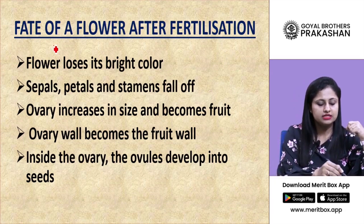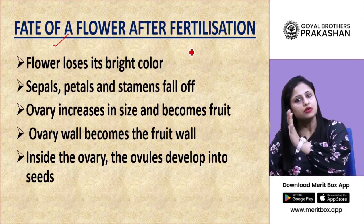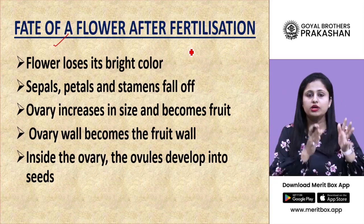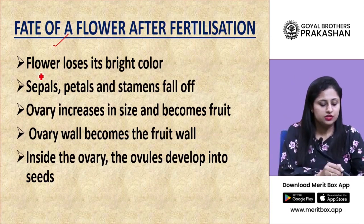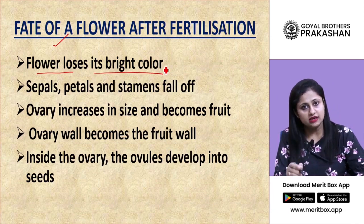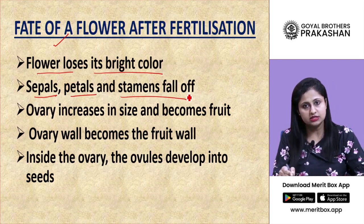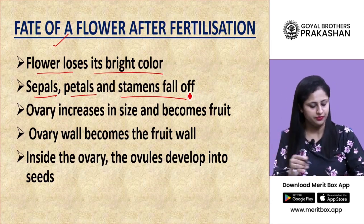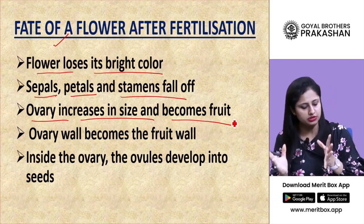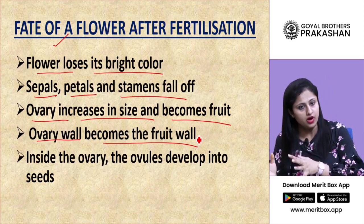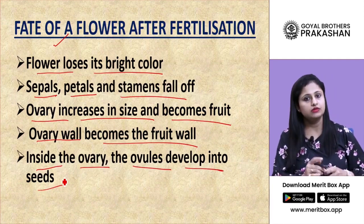After fertilization, the fate of a flower: the flower loses its bright color. Sepals, petals, and stamens all fall off or shed. The ovary increases in size and becomes the fruit, and the ovary wall becomes the fruit wall. Inside the ovary, the ovules develop into the seeds.